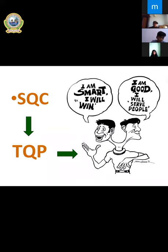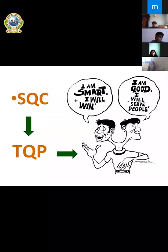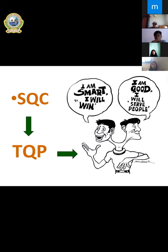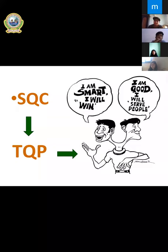What kind of person do we call a Total Quality Person? There are two heads — one head says 'I'm smart, I will win,' representing smart character, and another head says 'I'm good, I will help people,' representing good character. When a person has both smart and good character, that person is said to be a Total Quality Person. In the long run, the experience of involving in SQC can make you a Total Quality Person in the future.